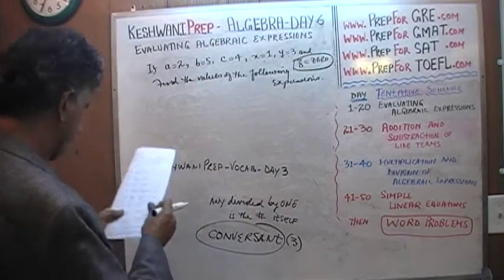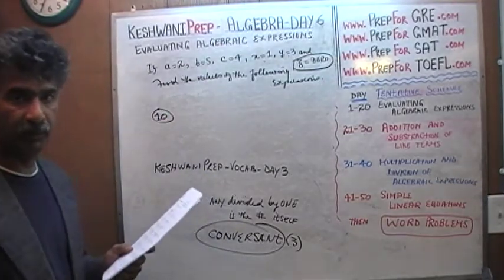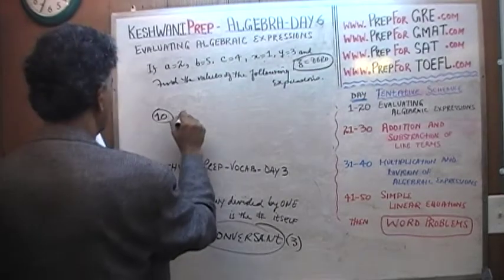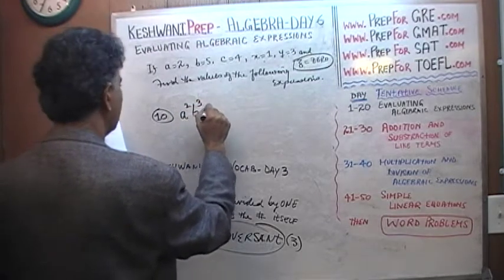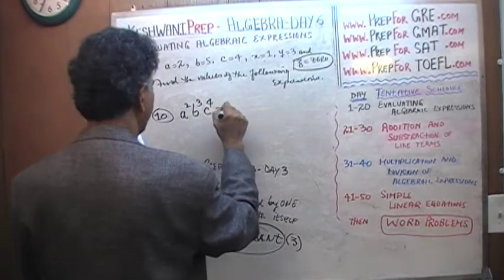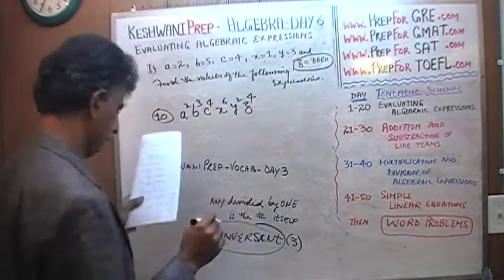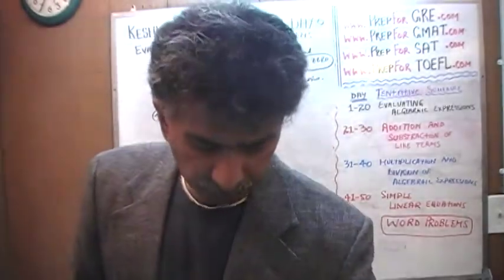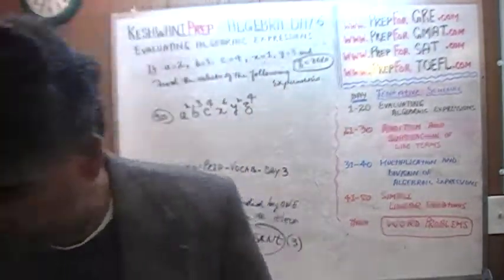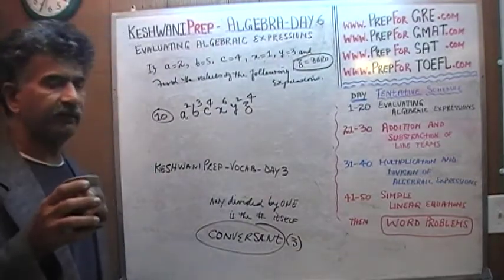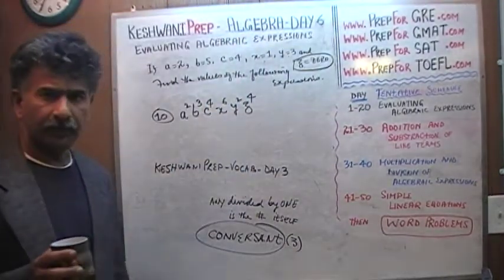Finally, the last problem, which is number 10. Number 10 is fairly complicated. I'm going to actually give you a chance, a couple of seconds, to actually do it out yourself before I do it. Because it's, as I said, fairly complicated. A squared times B cubed times C raised to 4 times X raised to 6 Y squared times Z raised to 4. I want you to do it out. Pause the video at this point. Pause the video, do it out, and once you're done with it, then you can resume the video.